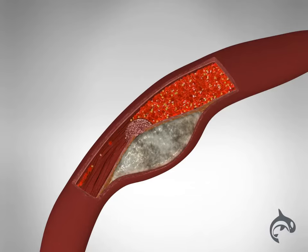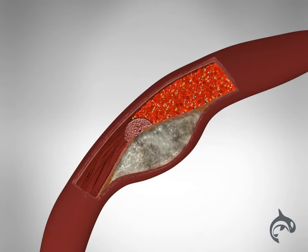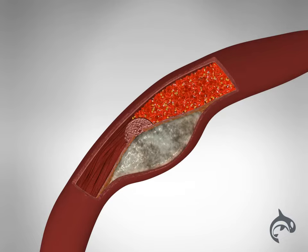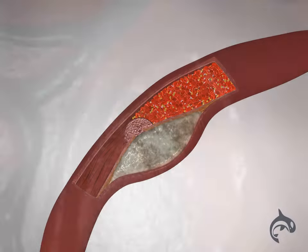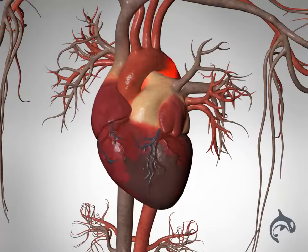The part of the heart that normally gets blood from the arteries suddenly loses its blood supply. Unless blood flow is restored, the heart muscle can die and no longer pump effectively.